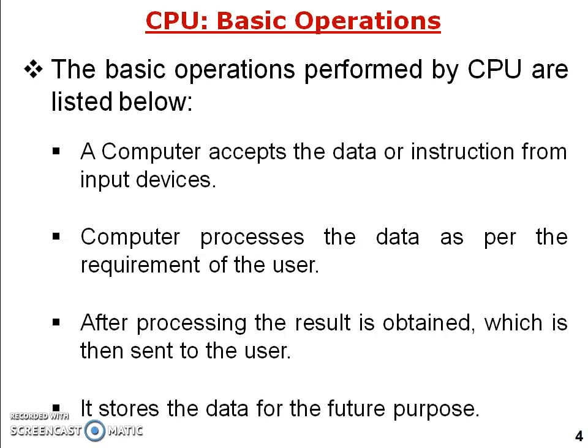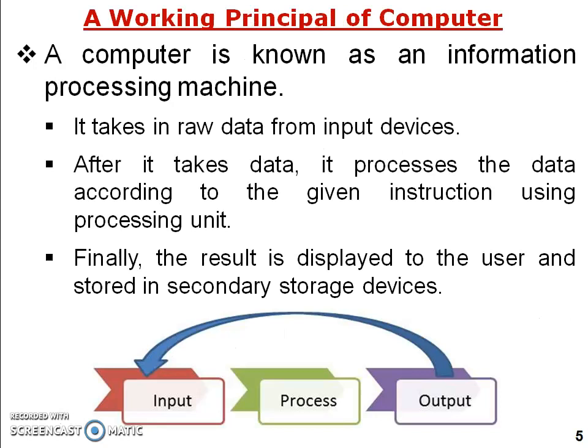The basic operations of a CPU are: first, input operation — the computer accepts data or instructions from the input device. Second, processing — the computer processes the data as per the user's requirement. Third, output operation — the result is obtained and sent to the user. Fourth, storage operation — the data is stored for future use using the secondary storage device. So there are basically four operations: input, processing, output, and storage.